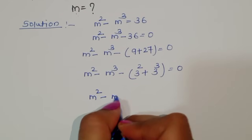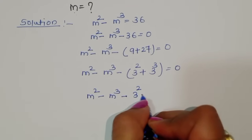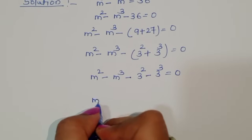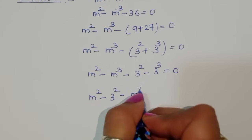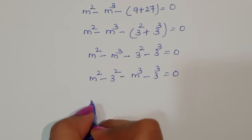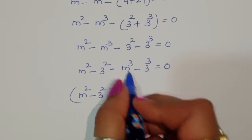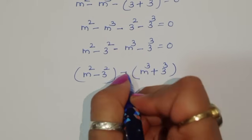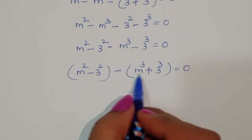We can write this as m squared minus 3 squared, and here minus m cubed minus 3 cubed, equal to 0. Now taking the outside minus: m squared minus 3 squared minus m cubed plus 3 cubed equals 0.